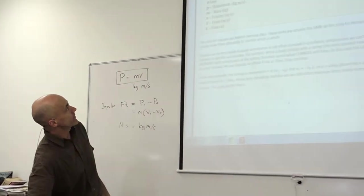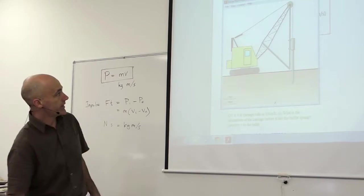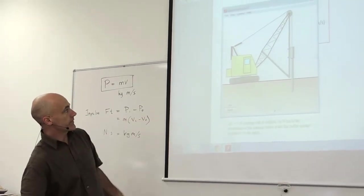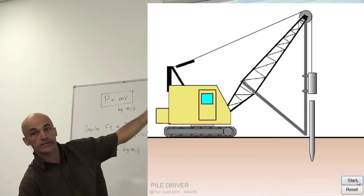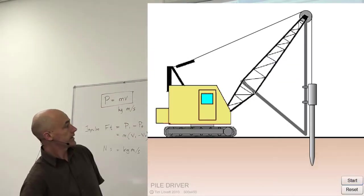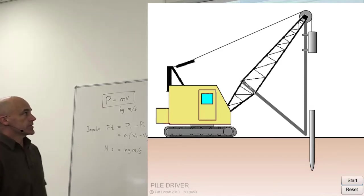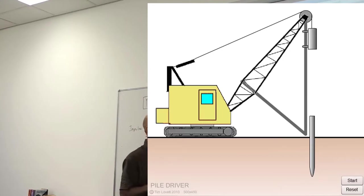I'm going to do an example which is a pile driver. The way this works is basically just a giant hammer hammering a giant nail into the ground, usually for a foundation. Lift up the hammer, drop the hammer, and it sinks the pile into the ground a little bit. You keep repeating that until you've gone down as far as you need to go. This uses conservation of energy and conservation of momentum, two things at once.